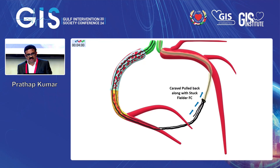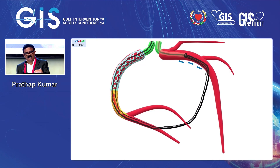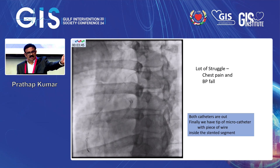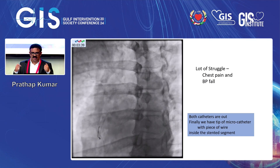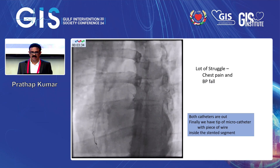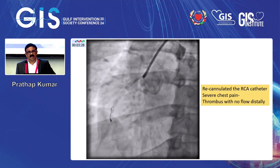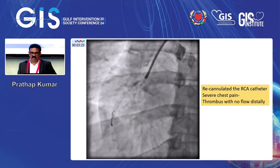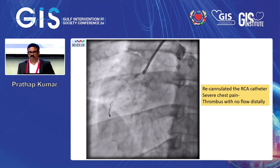The Caraville pulled back — I didn't want to pull everything together because the septal artery would be completely destroyed. The Caraville had gone into the anti-grade wire. A lot of struggle — chest pain and BP fall. I removed both catheters, but both wires of the RG3 on either side remained in my hand. Finally I put the tip of a microcatheter and a piece of wire inside the stent segment. I recanalized the RCA catheter through the same RG3. The patient had severe chest pain — I understood there was thrombus inside the RCA with no flow distally.